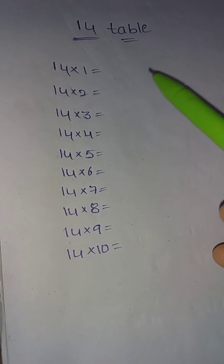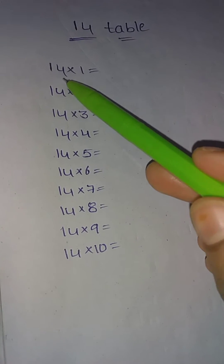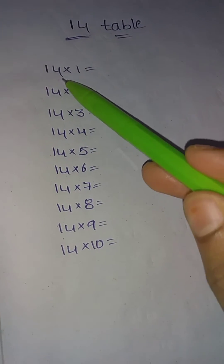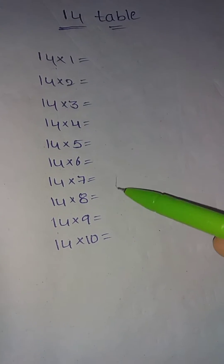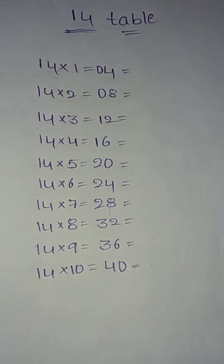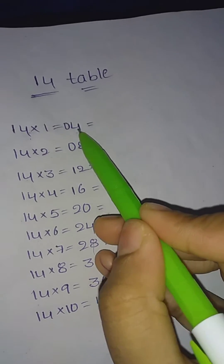To learn the 14 times table, we first need to enter the 4 times table. So: 4 times 1 is 4, 4 times 2 is 8, and 4 times 10 is 40.